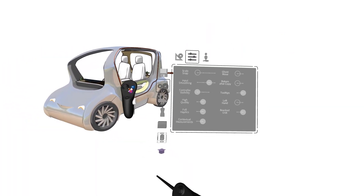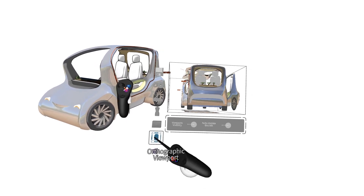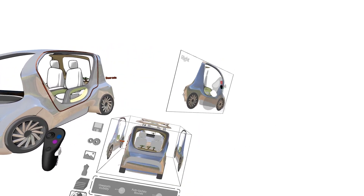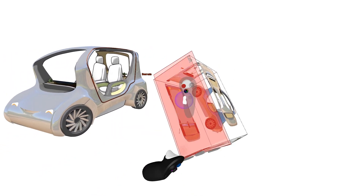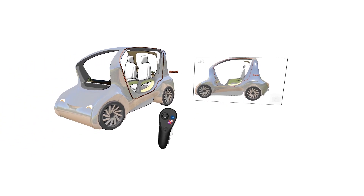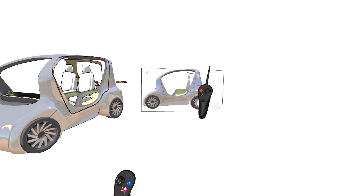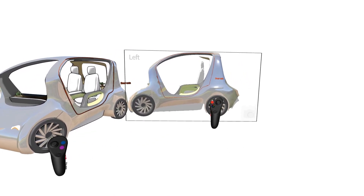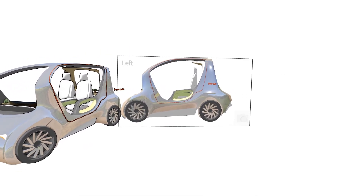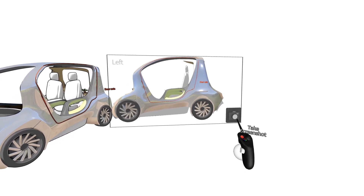Finally we can open up the orthographic viewport and grab one of the views. On this view we can just click the screenshot icon and now we have a perfect orthographic screenshot of the side view of this vehicle.